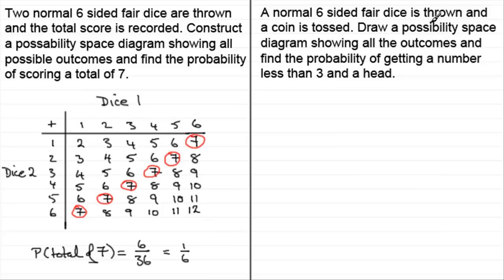Now I've got another example here. You might like to try this one. A normal six-sided fair dice is thrown and a coin is tossed. Draw a possibility space diagram showing all the outcomes and find the probability of getting a number less than three and a head. So just pause the video and see if you can do that one. I'll give you the solution in a moment.